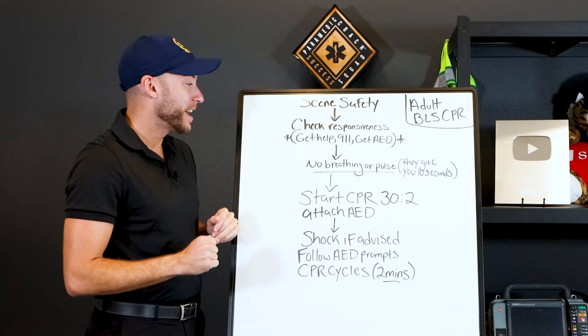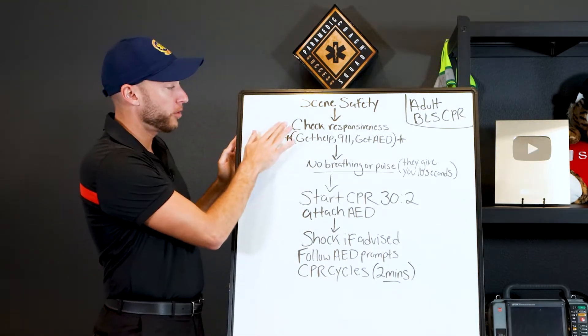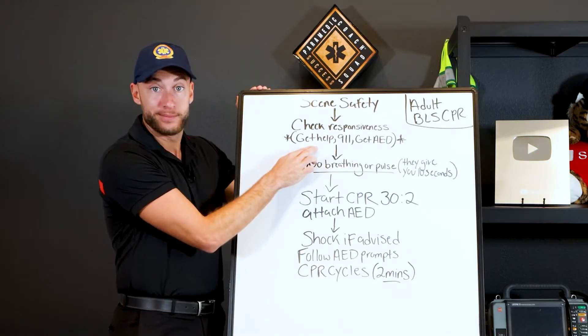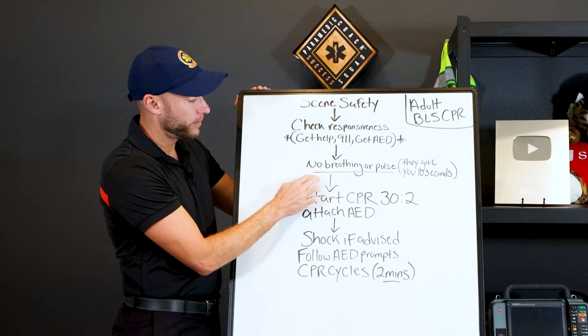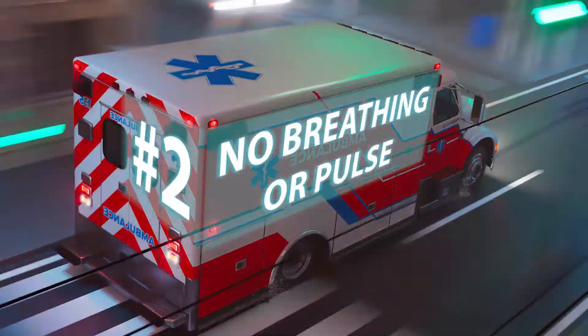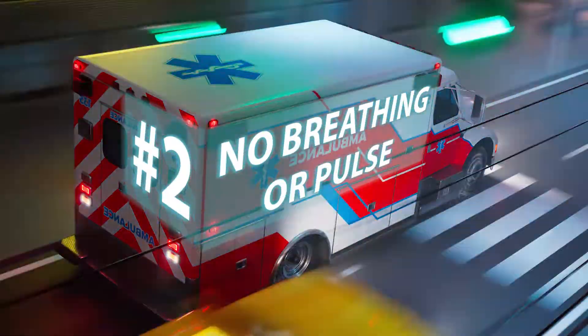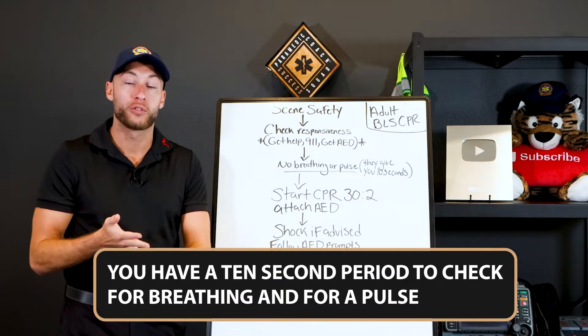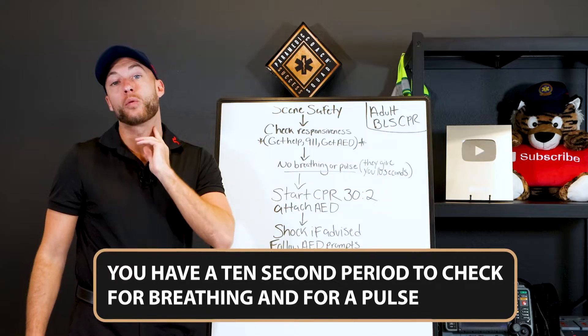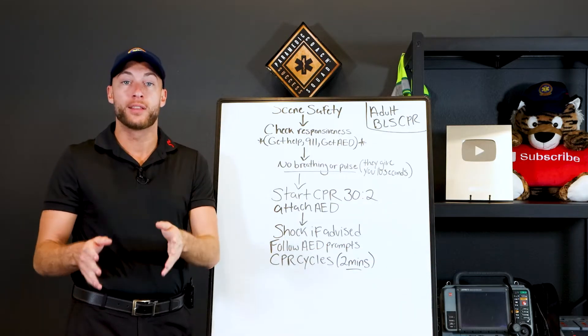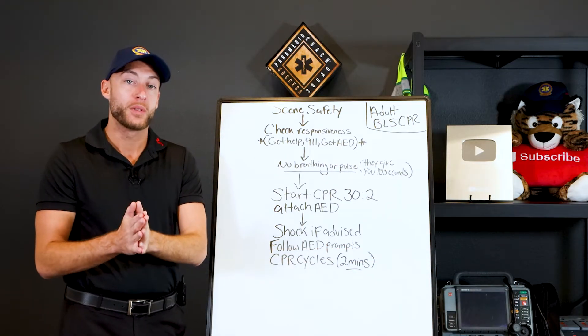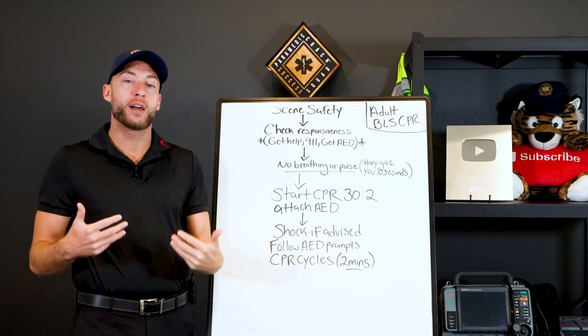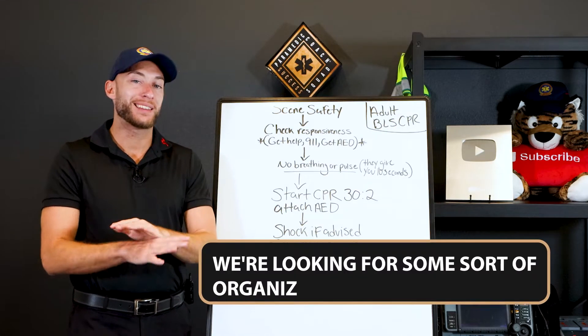So we're EMS now. We've checked responsiveness. Your partner has the AED. You are 9-1-1 and you are the help. Now here we are: no breathing or pulse. We have a 10-second period to check for breathing and check for a pulse. So where is that pulse located? The carotid pulse on the neck is what we're gonna look at.